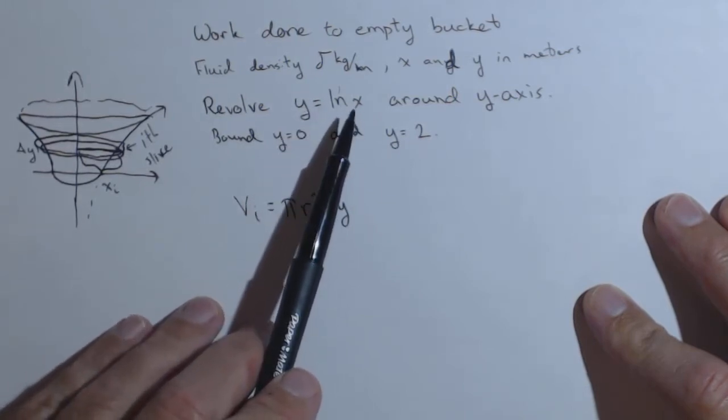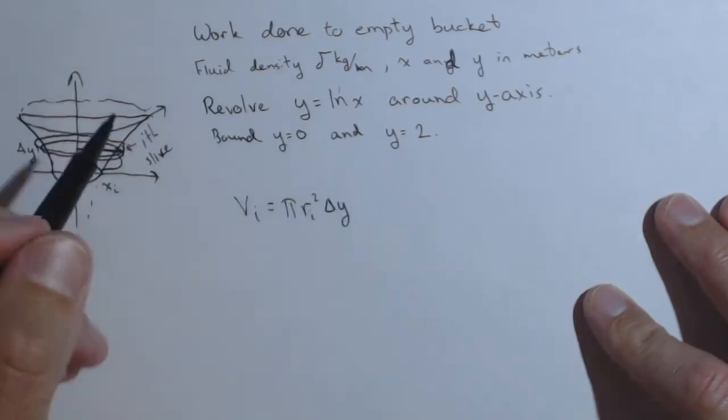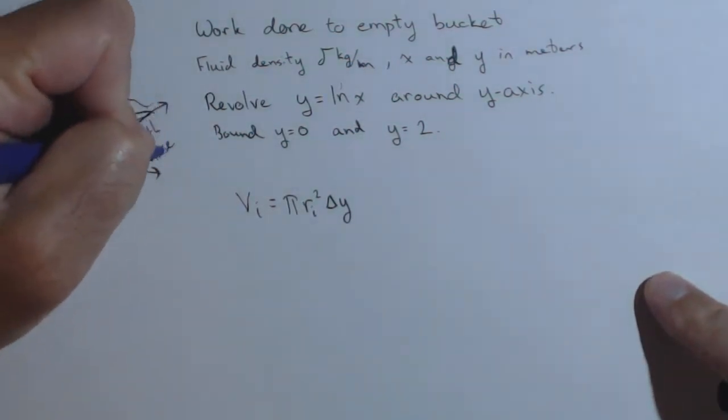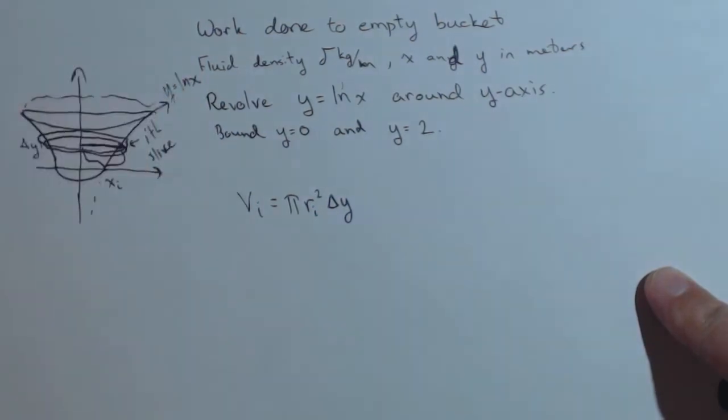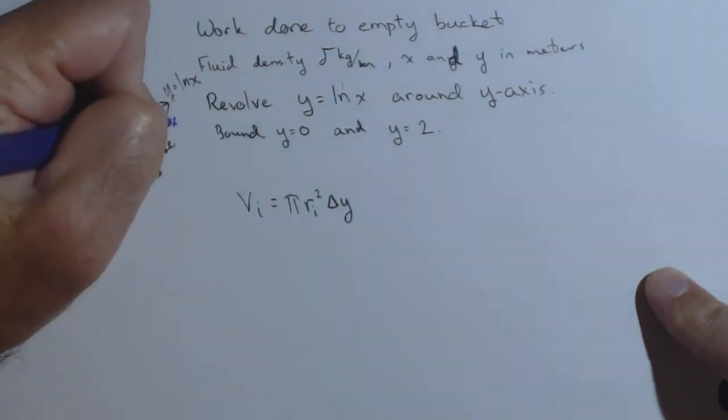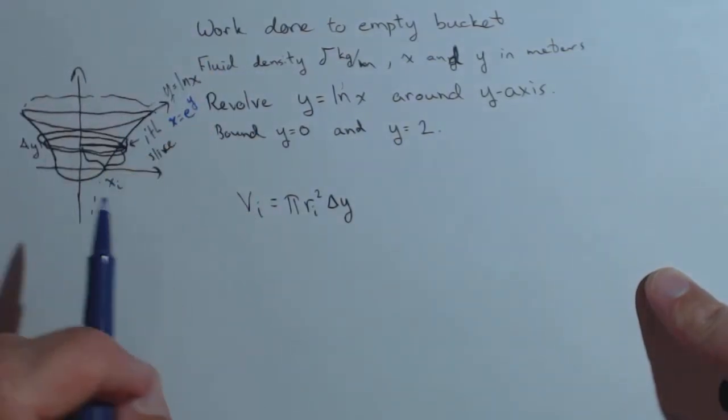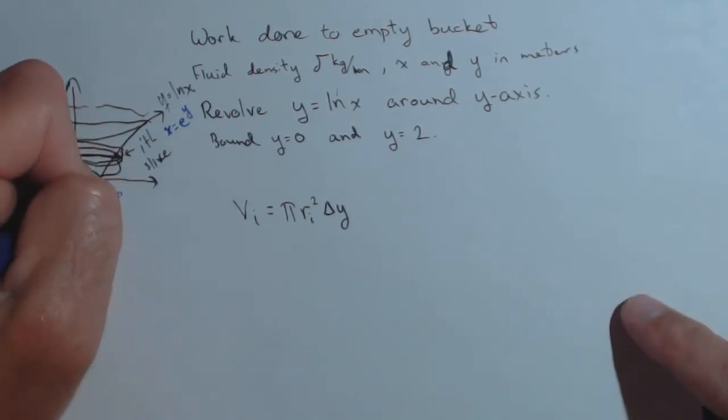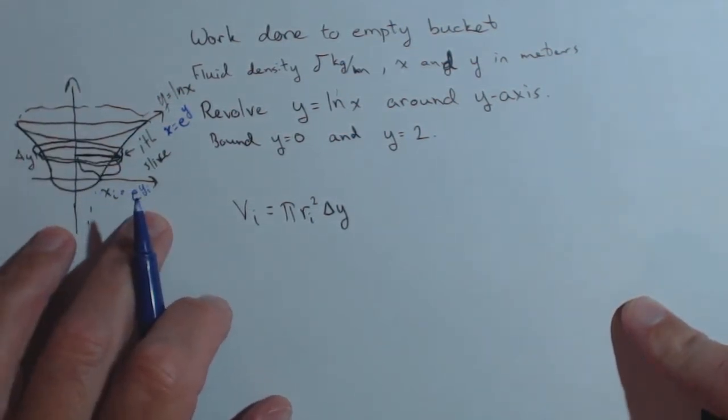We need the inverse of y=ln(x). Here's our graph of y=ln(x). Its inverse is x=e^y. So we have to find the inverse; we need this to be in terms of y. The radius of the i-th slice is x_i, but in terms of y, it's e^(y_i). Think of this as a way of translating between x and y.